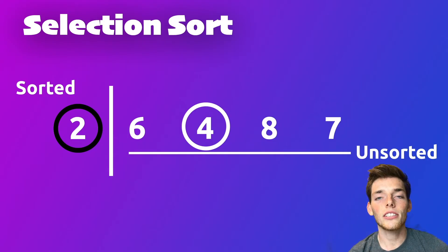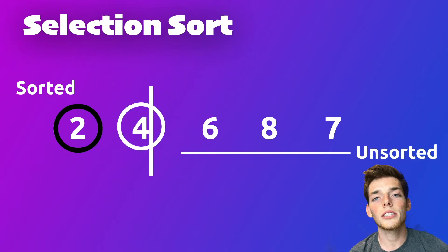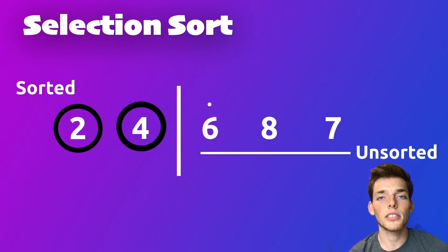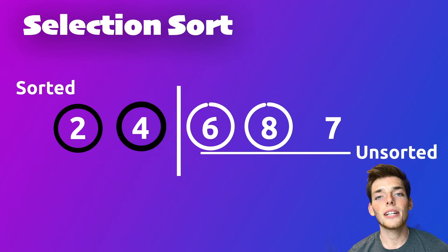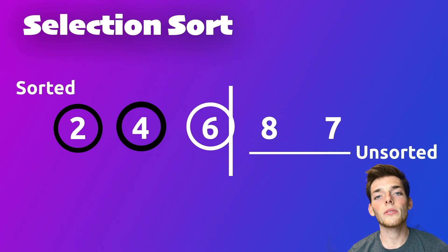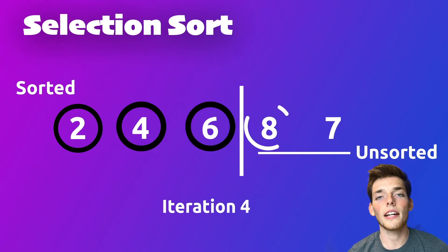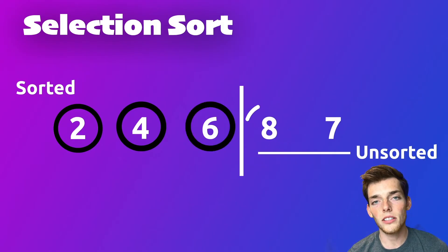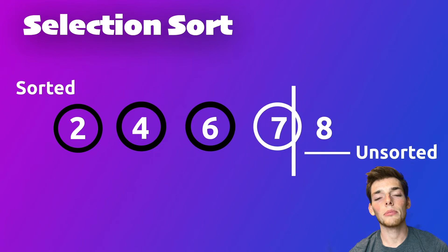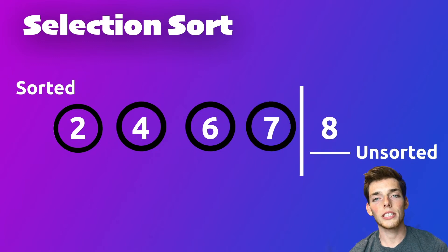This prevents us from having to do comparisons on items that we've already sorted. We'll continue doing these iterations, taking the minimum value from the unsorted sublist and placing it in the last position of our sorted sublist. Compared to the bubble sort algorithm, this one performs much nicer because the number of swaps it needs to perform is much lower. Finally, once we get to the end of the list, we have a completely sorted sequence of elements.